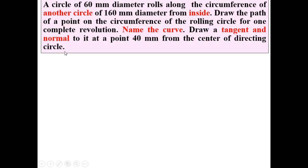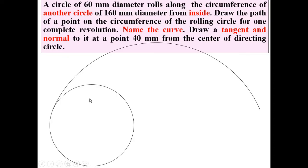Let's try to understand the description with the help of a figure. This is the directing circle having radius 80 mm, or diameter 160 mm. Inside this directing circle, a rolling circle of 60 mm diameter rolls. This is the directing circle, and inside it the rolling circle rolls. We want to draw the path of a point on the circumference of the rolling circle.